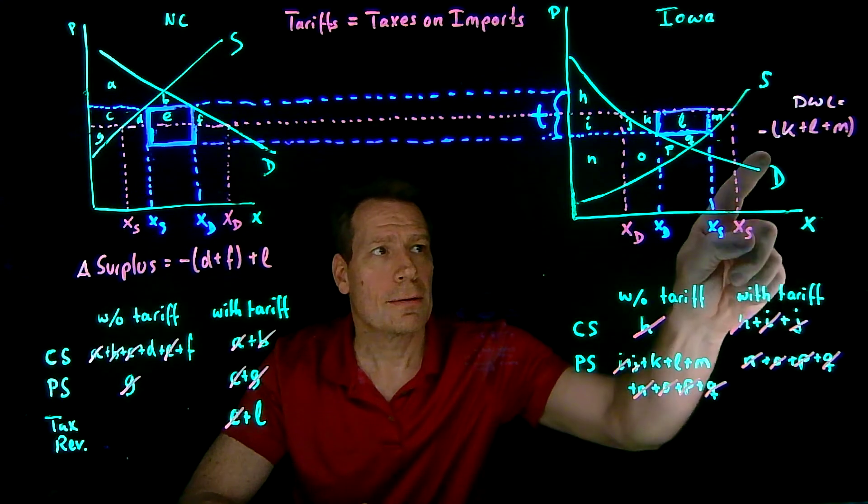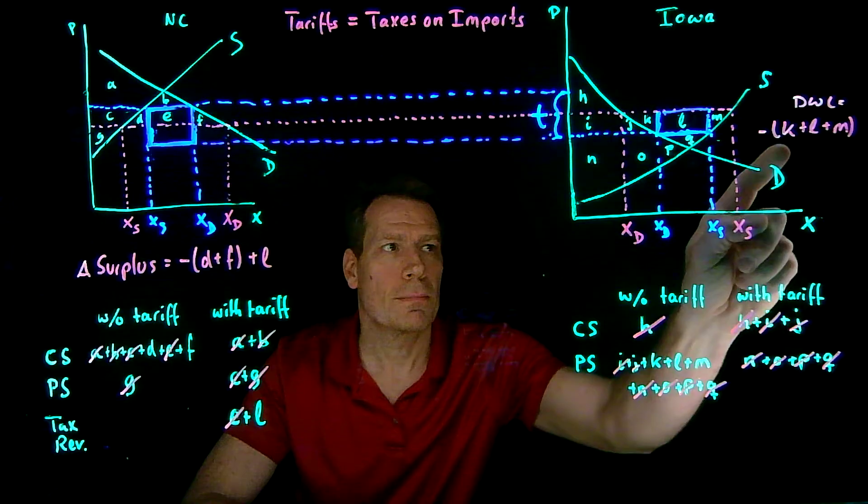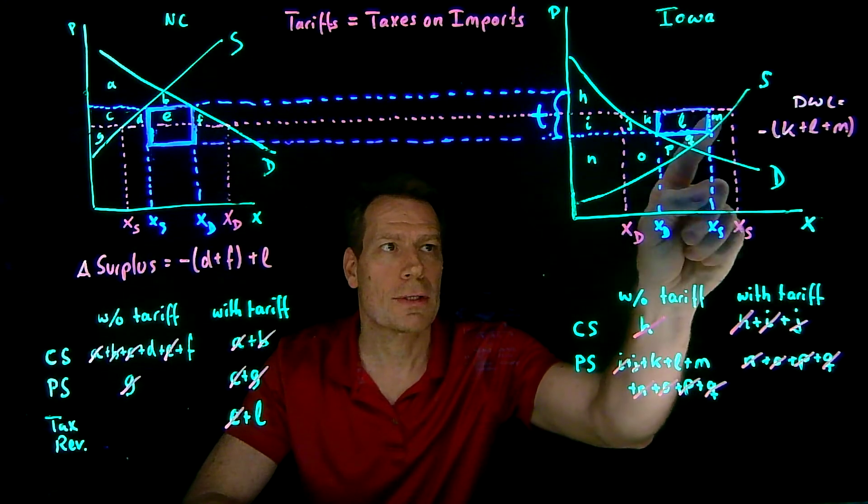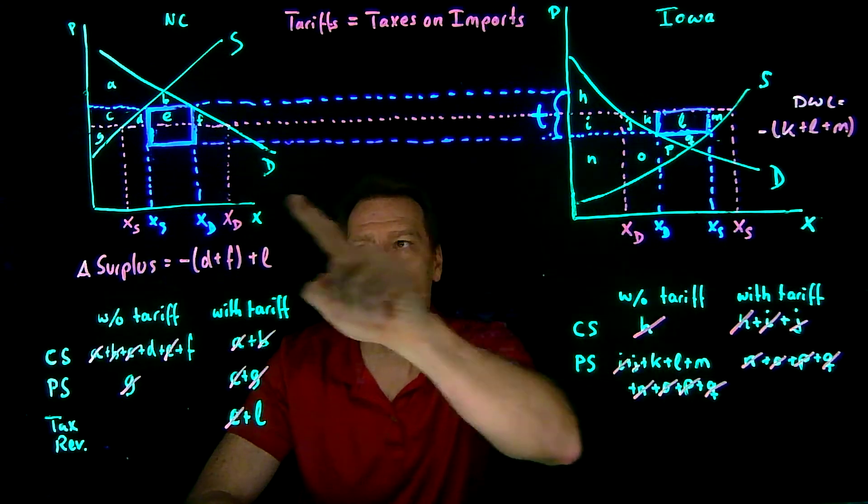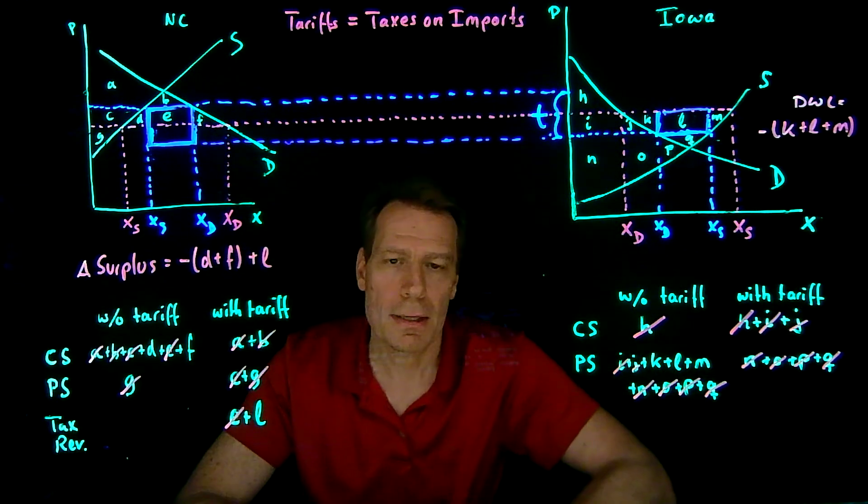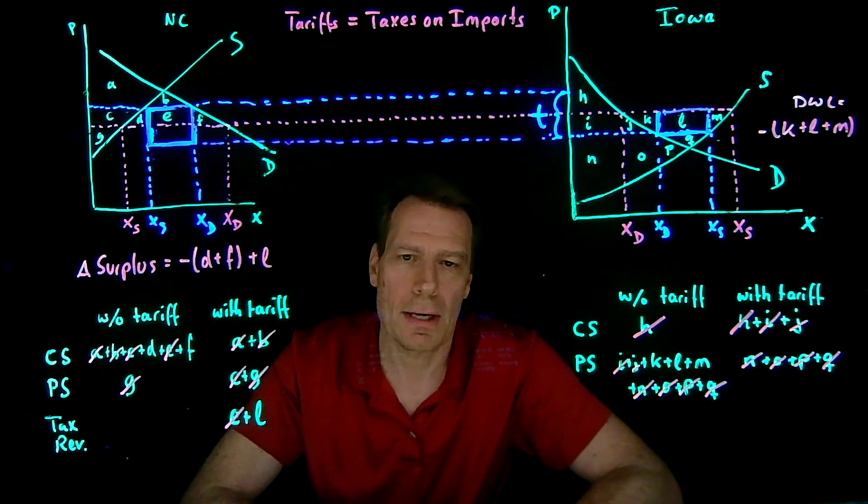In Iowa, on the other hand, we only have losses. We lose K, L, and M. We lose the triangles K and M, plus we lose that L. That's the tax revenue that's paid by Iowa residents in North Carolina. So we know that Iowa is certainly going to lose.